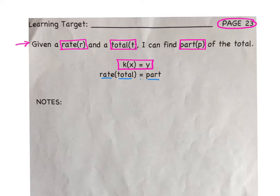So we take out the k and the x, although k still represents rate. In our case, we're going to use r for rate times t, the total x, equals y, the part we're in search of. So our formula will look like this: r times t equals p.